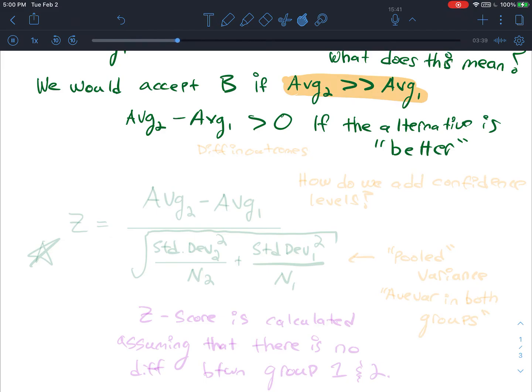This is something I think all of you have actually sort of proposed in class when you were talking about your different solutions. So our z-score very naturally looks at this difference. The first thing in our z-score, we'll start to write out the z-score, is we look at average 2 minus average 1. This is super intuitive. Maybe I'll write this in a different color. How do we add confidence levels?